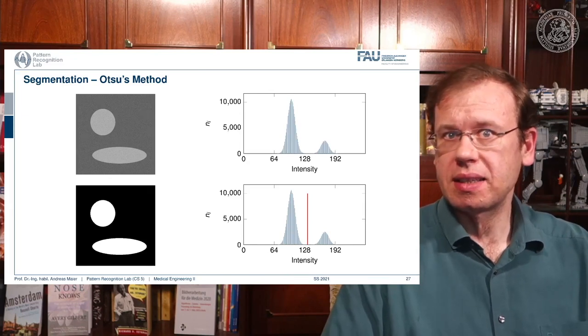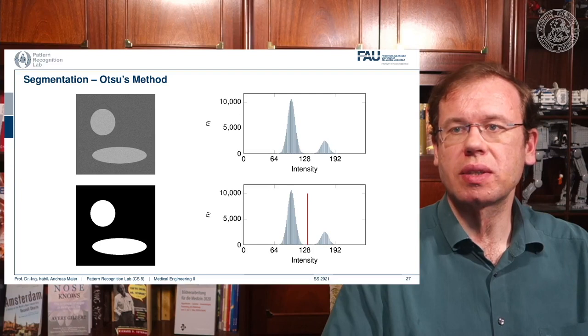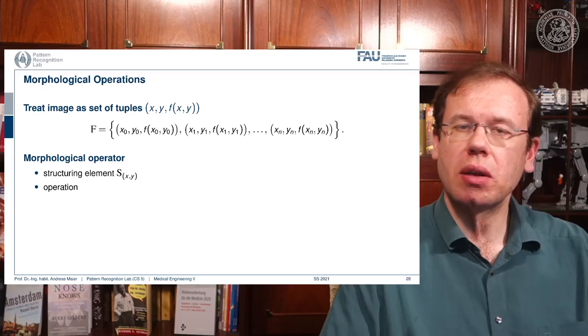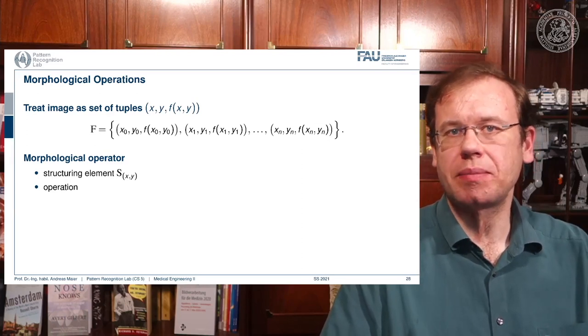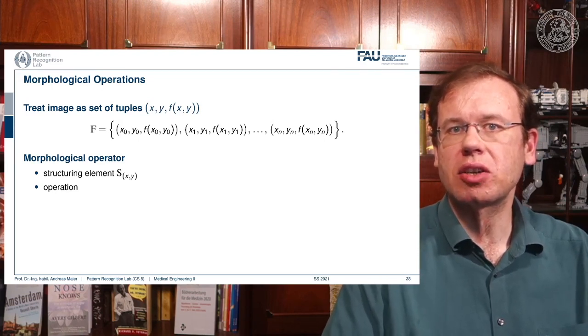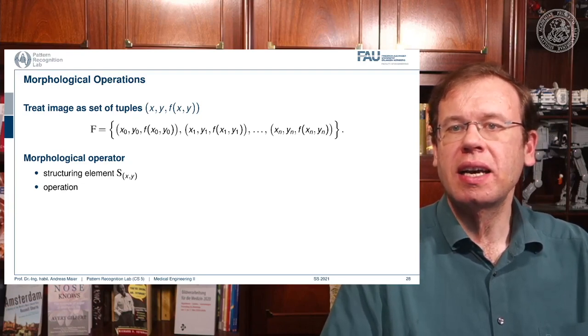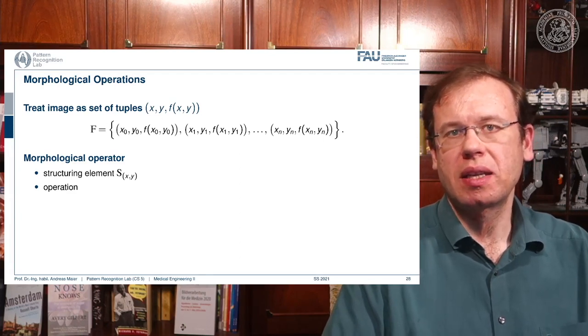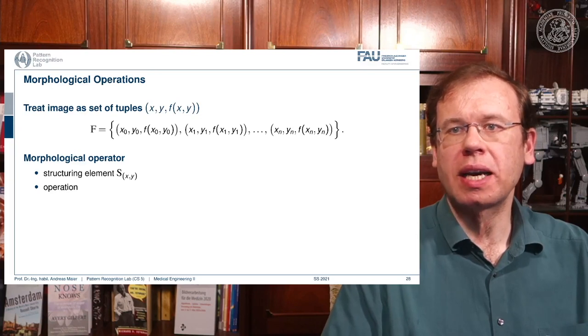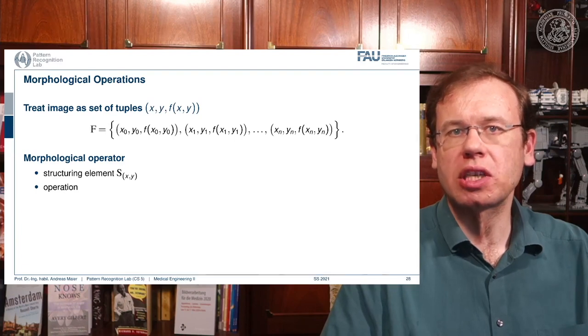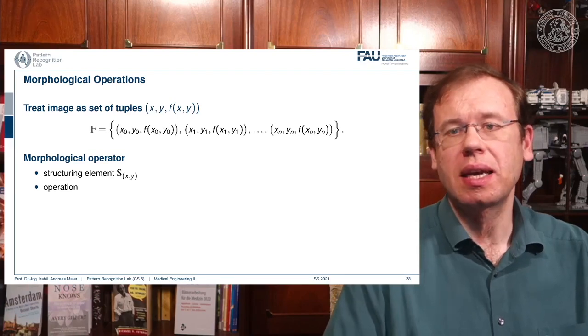Now once you have masks that are images that only consist of zeros and ones, then we can start talking about morphological operations. Morphological operations interpret the image as set. And you can say now that ones and zeros essentially mean that you're part of the set or not. So your entire image becomes a set of tuples. So you have the pixel x, y and the value of f of x, y. So this is a set of all the points. And then you introduce a so-called morphological operator that consists of a so-called structuring element and the operation.